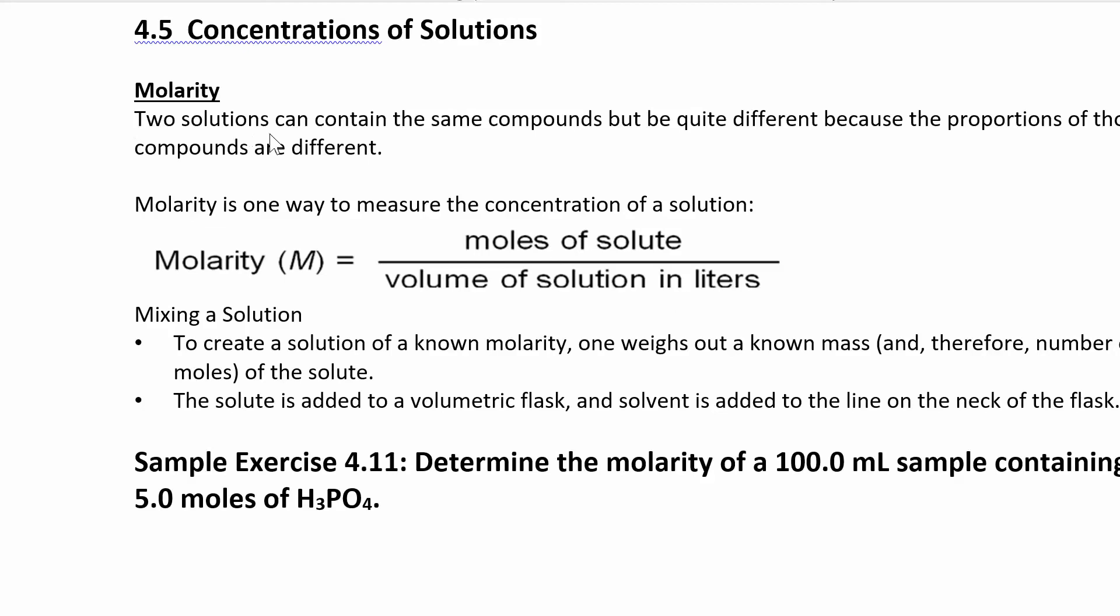Two solutions can contain the same compound but be mixed in different proportions. So you can have a different volume of water in there or something. To make a solution, you're going to weigh out a certain mass, put that in usually a volumetric flask, fill it up to the line with water, dilute it. That's an aqueous solution. So if you know the moles and you know the liters you can figure out the molarity. Or if you know the grams of your compound, you can get to moles using molar mass and then moles over liters gives you molarity. So if you know any two of these three things you can find the other one.